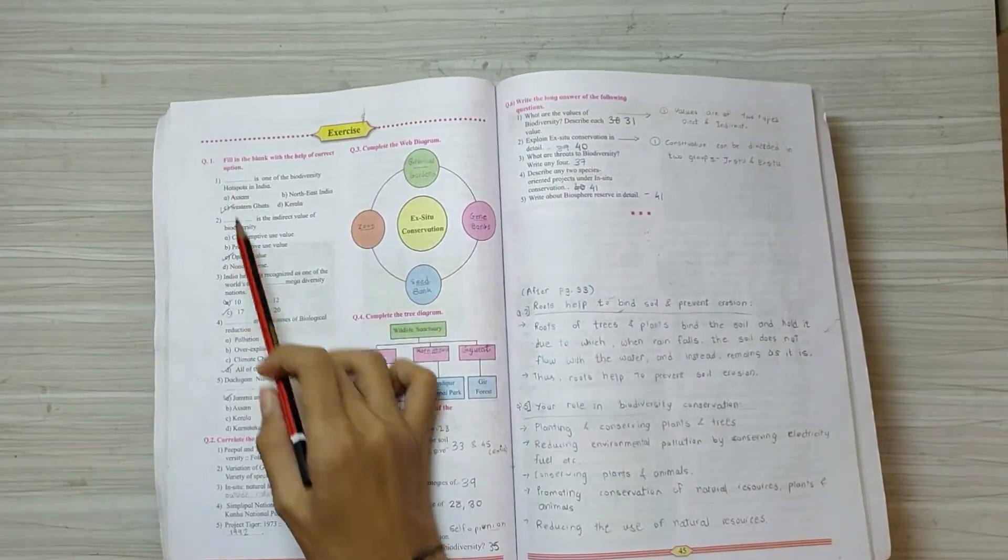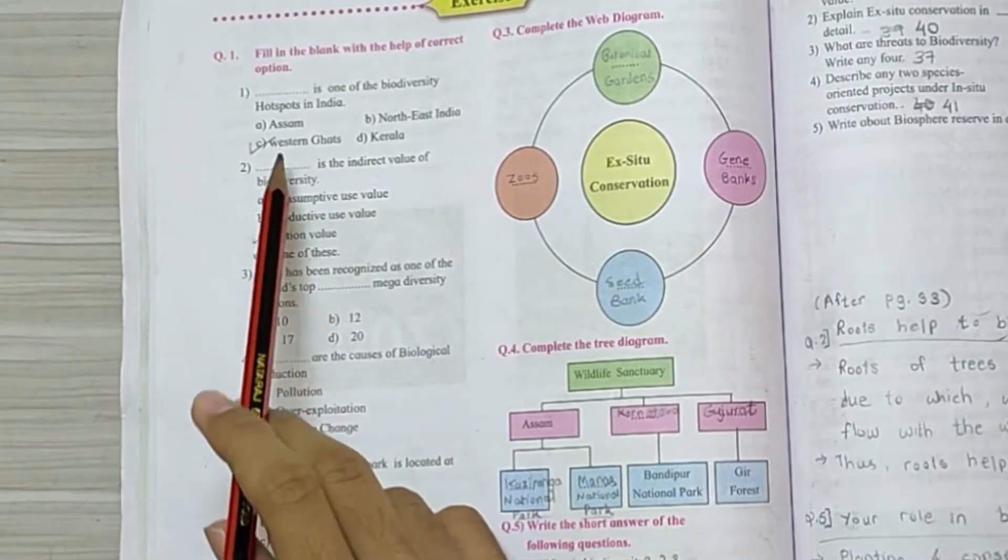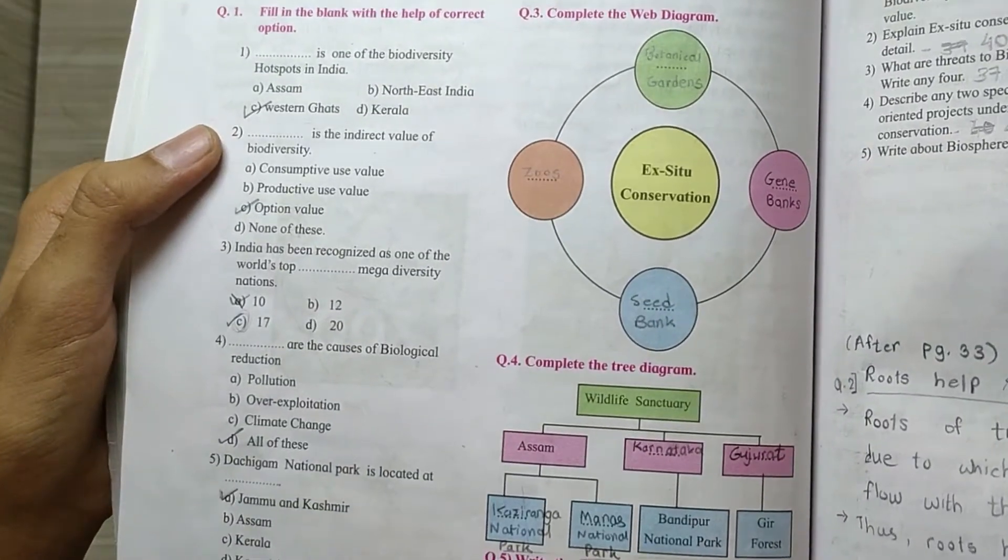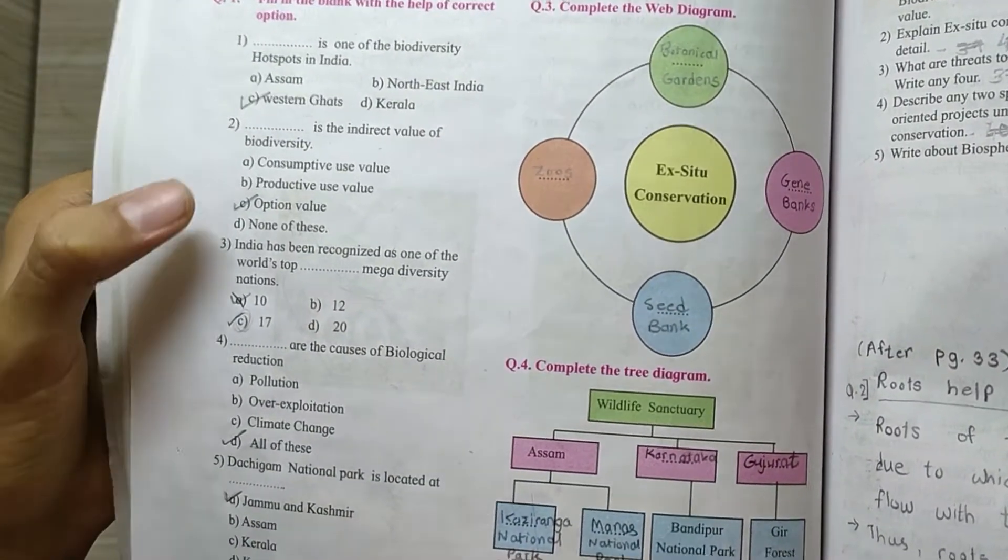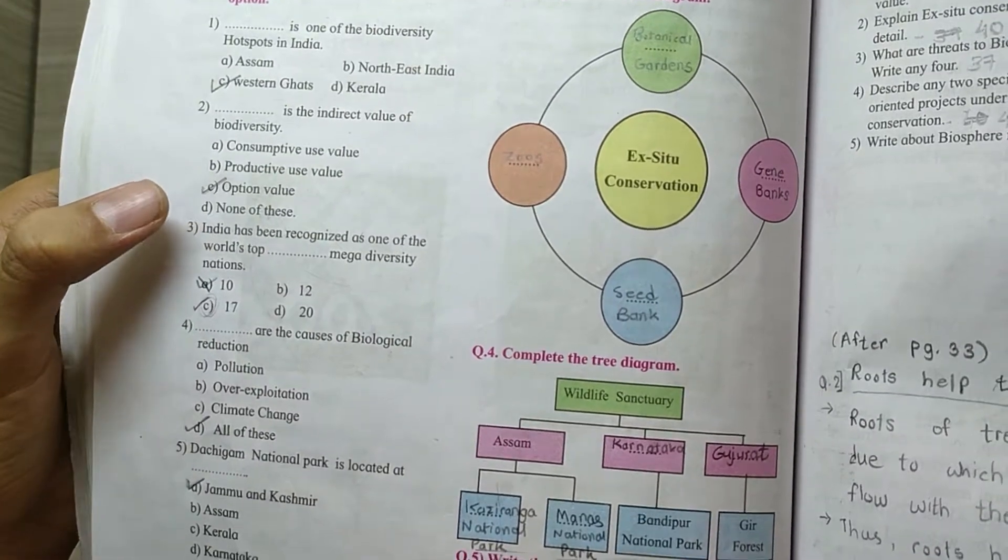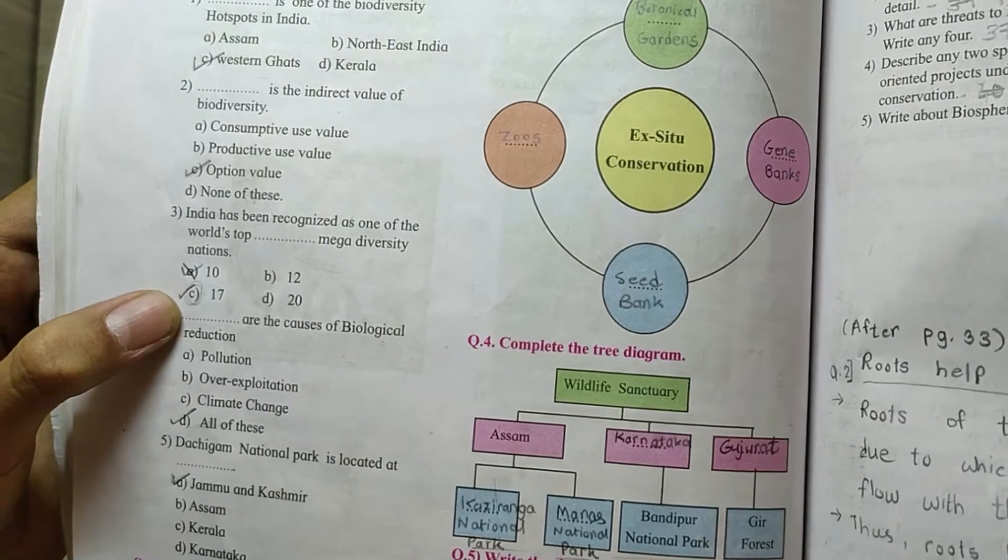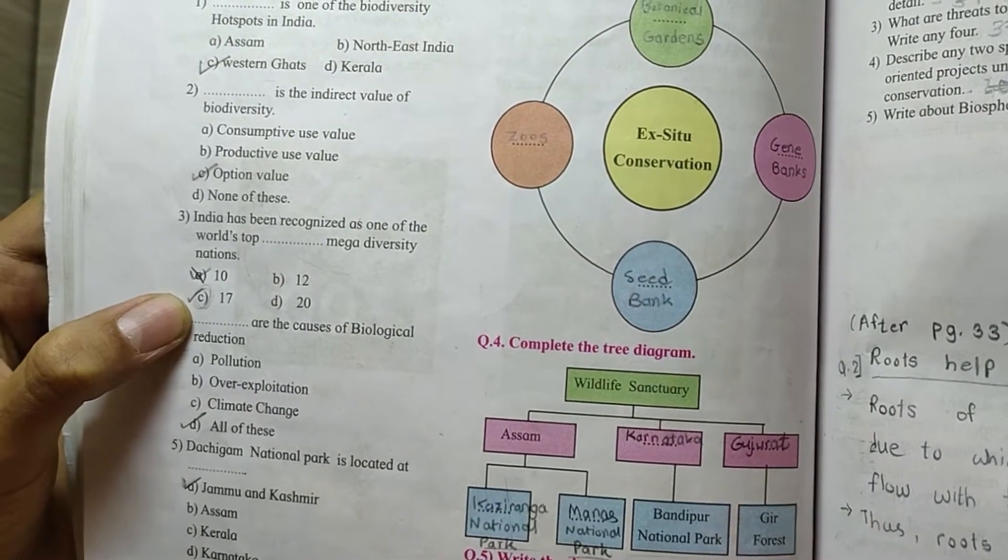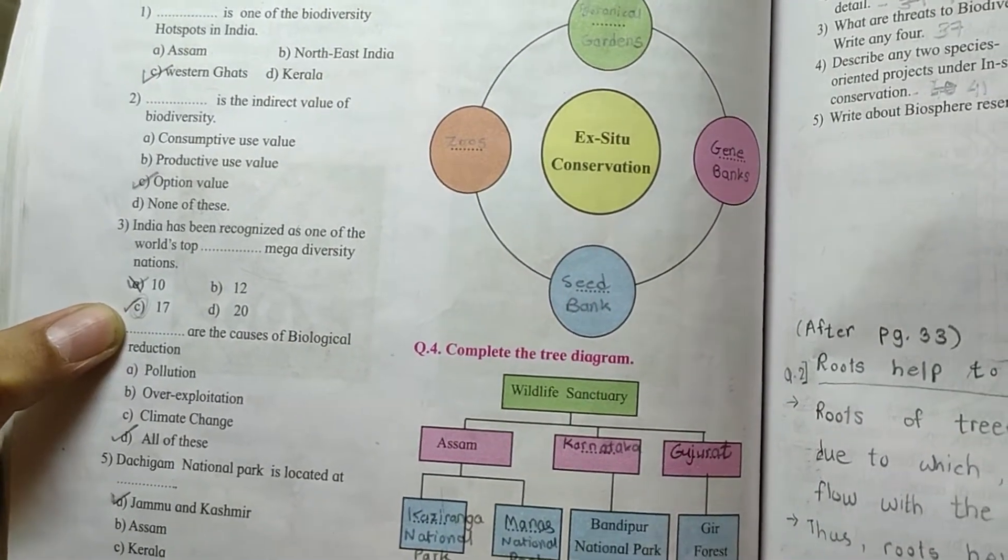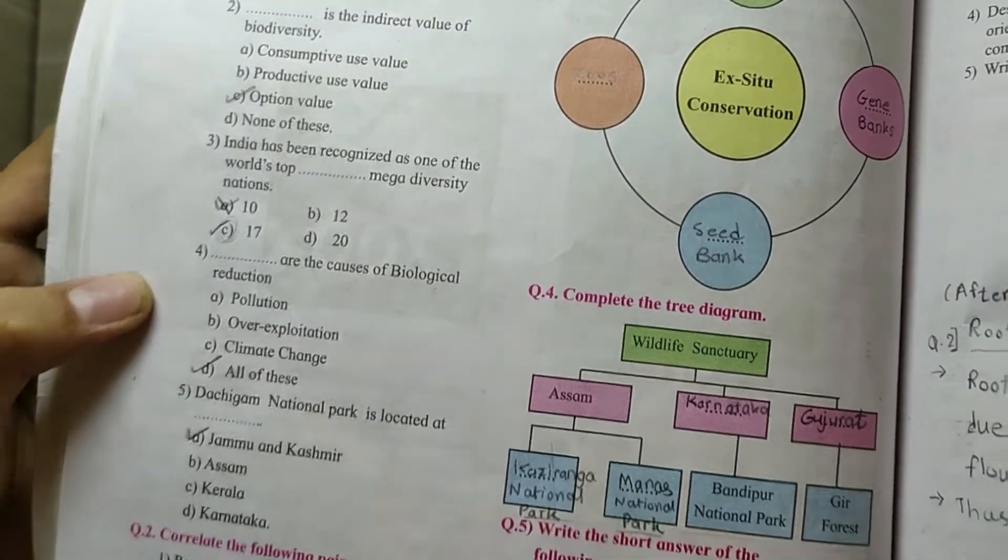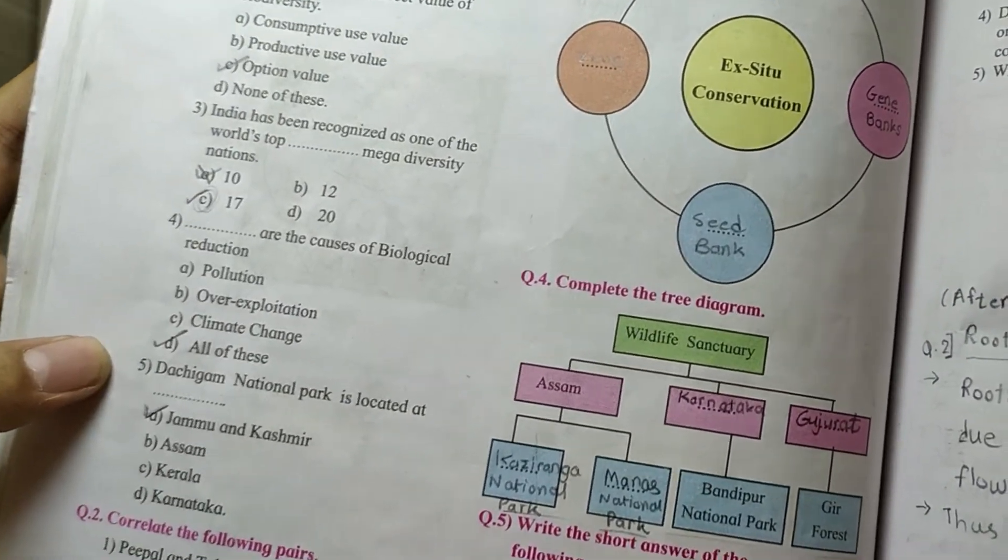The first question is FIB. First answer is Western Ghats, second answer is indirect value of Biodiversity is option value C, third is C17, India has been recognized as one of the world's top 17 Megadiversity nations, fourth, all of these, fifth, Jammu and Kashmir.